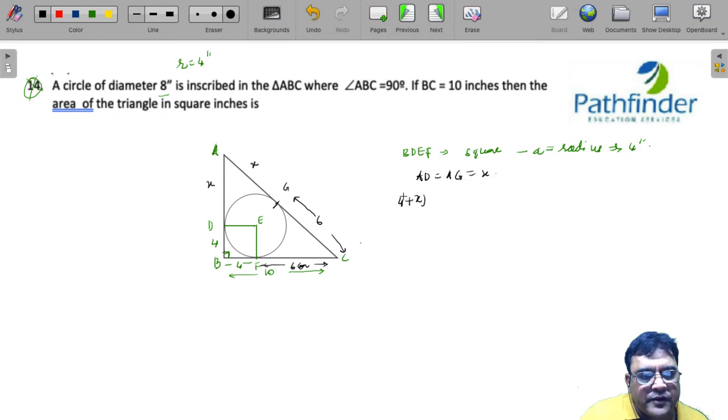One side is (4 plus X) whole square plus 10 square is equal to (6 plus X) whole square.